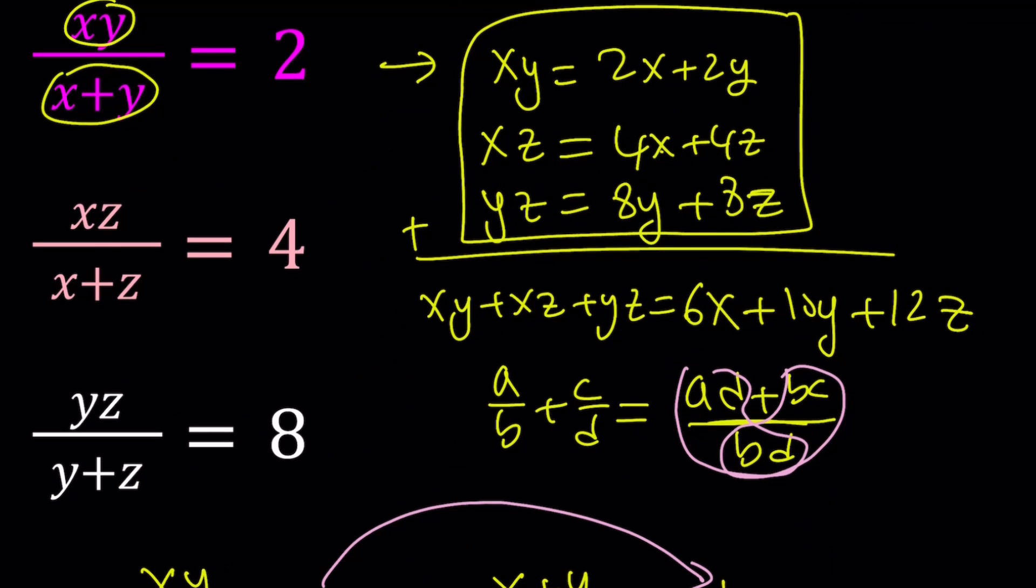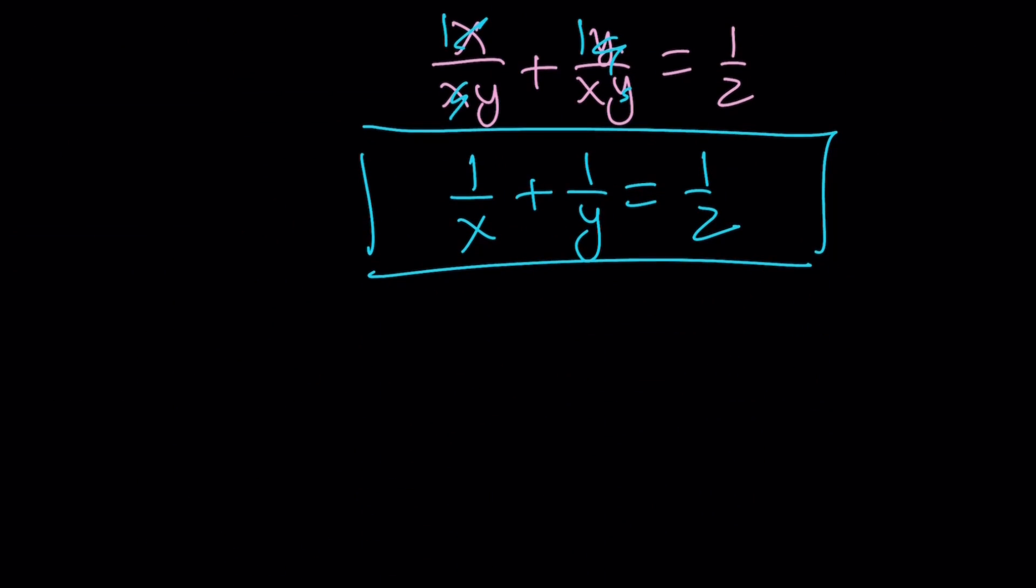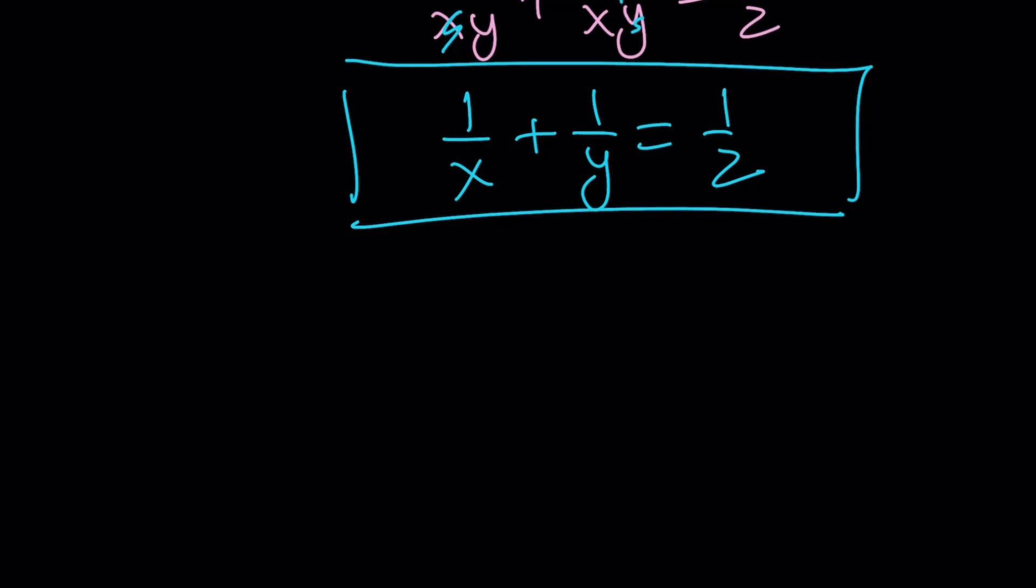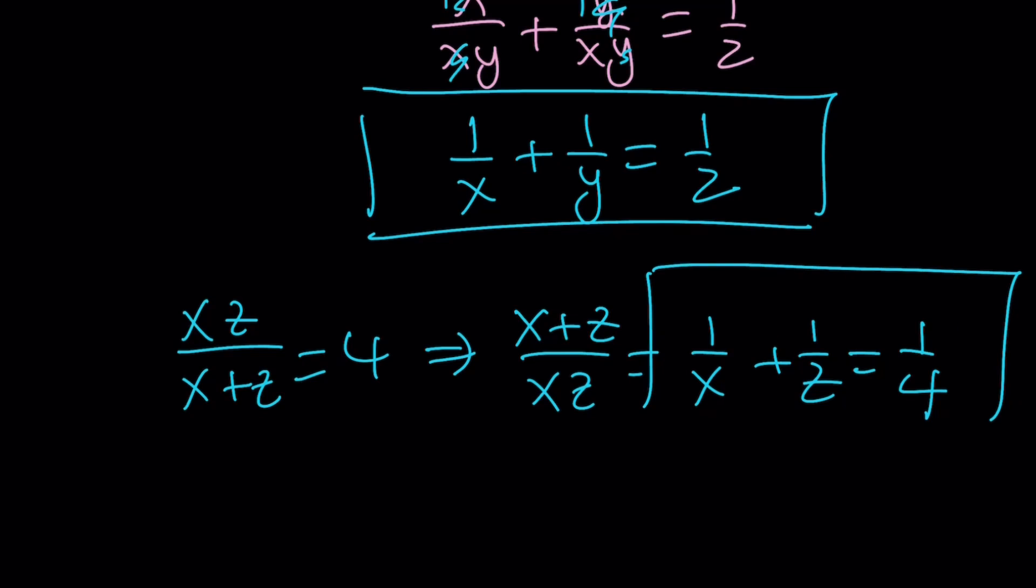What about the second one? Same thing, you're just going to flip and then split. So, we have xz over x plus z equals four. And now, we're going to flip x plus z over xz, which can be written as one over x plus one over z. I hope you got that idea. Equals one fourth. That's another equation that I'm going to be using.